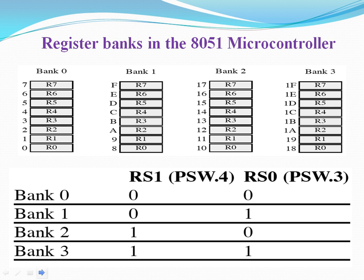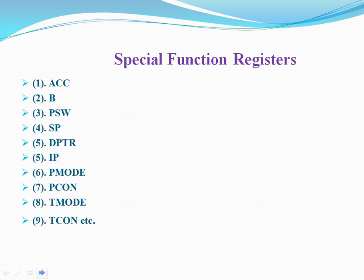The RAM has 4 register banks: Bank 0, Bank 1, Bank 2, and Bank 3. As mentioned earlier, all banks have registers R0 to R7 — a total of 32 registers, each of 8 bits. If you want to select a particular bank, you have to configure PSW4 and PSW3, which are bits of the PSW register.